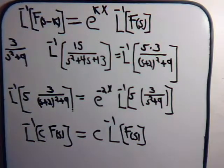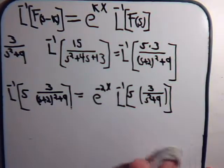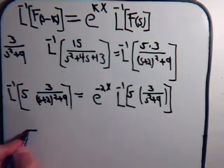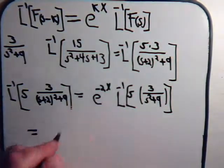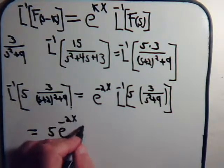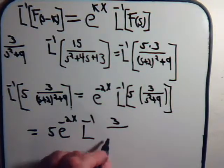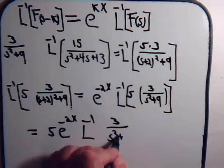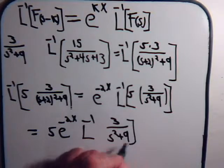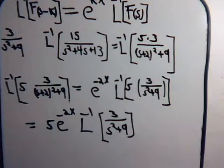So you need 5 to the outside here. This is going to equal, take the 5 out, we'll have 5 times e to the minus 2x times the inverse Laplace transform of 3 over s squared plus 9. And hopefully we'll recognize what that is then. That's the sine of 3x.